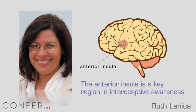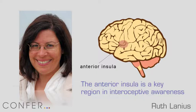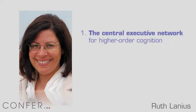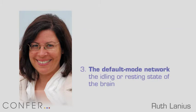This region of the brain seems to be key in bringing online, for example, the central executive network when we want to engage in a cognitive task — when we have to remember something. At the same time, the anterior insula would then disengage the default mode network because we're actively engaged in cognition.